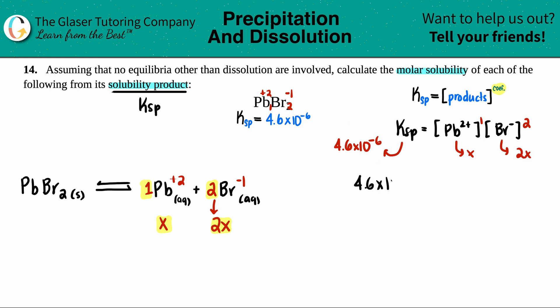4.6 times 10 to the negative six equals, I have my two things here. We got an X value. And then we have a 2X squared. So let's conquer 2X squared. Anything squared just means that you have two of these being multiplied by each other. So it's basically 2X times 2X.